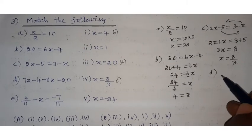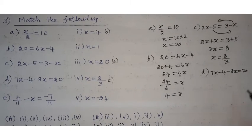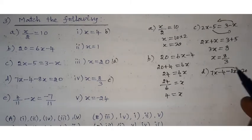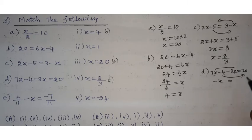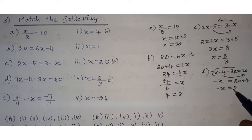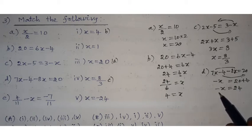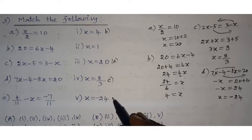Option D: 7x minus 4 minus 8x equals 20. Combine like terms: 7x minus 8x gives minus x. Bring minus 4 to the other side as plus 4. So minus x equals 24, therefore x equals minus 24.